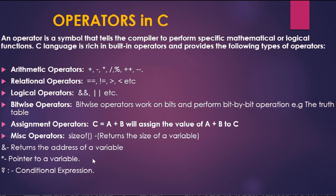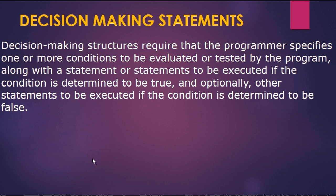Next we will discuss decision making statements. A decision making statement requires the program to evaluate one or more conditions and execute a statement if the condition is true, and optionally another statement if the condition is false. For example, if the value of x equals 10, you can execute a particular statement. There are several decision making statements in C that we will discuss one by one.